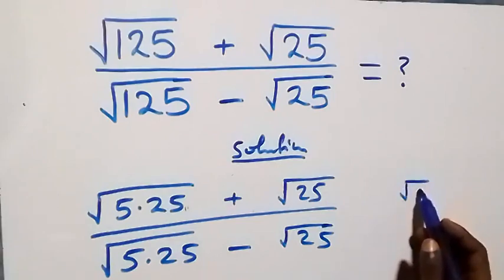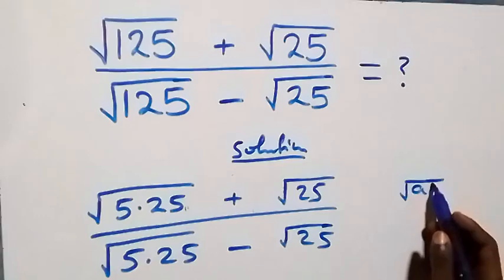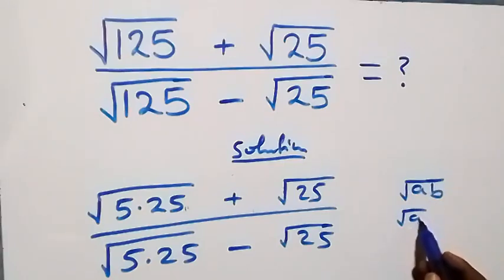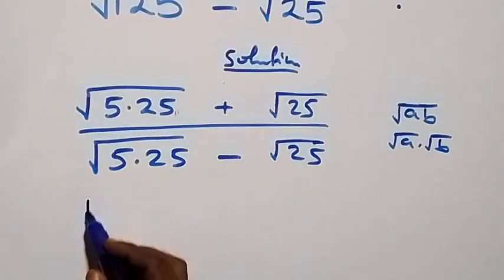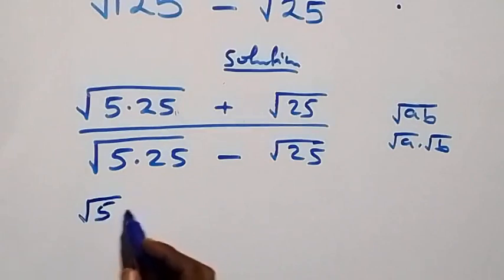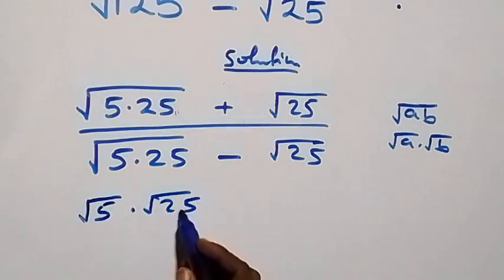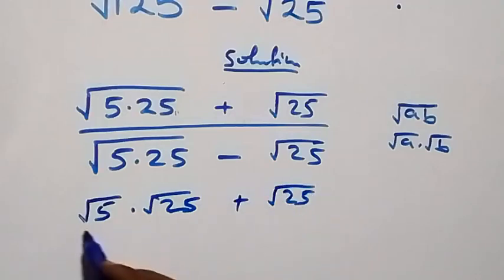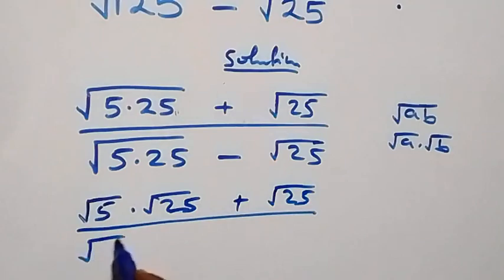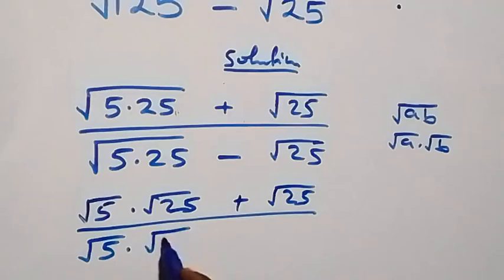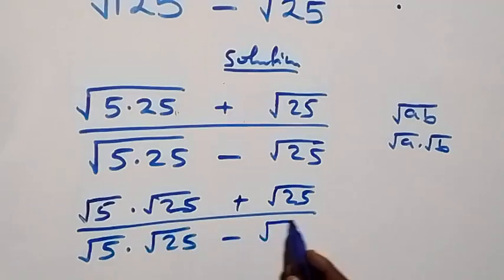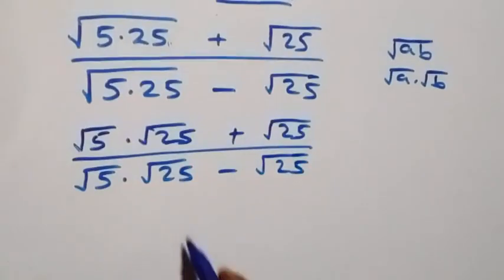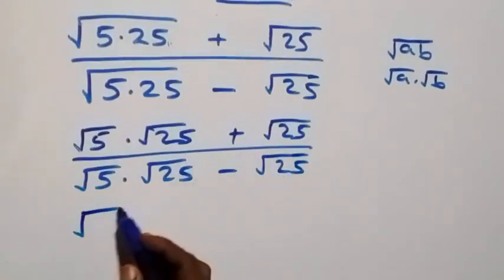When we have root of a times b, we can separate it as root a times root b. So what we have here becomes root 5 times root 25, plus root 25, then divided by root 5 times root 25, minus root 25.